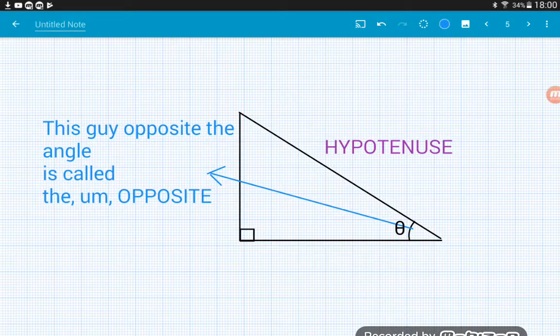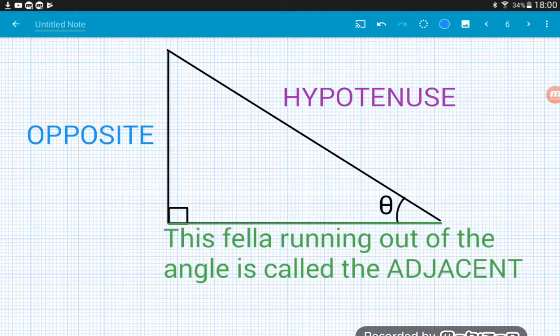What about the other side then that runs out of the angle? So this chap running out of the angle along the bottom in green, this guy is called the adjacent.